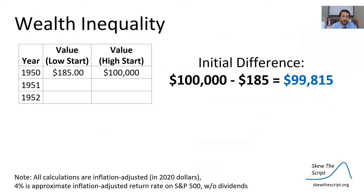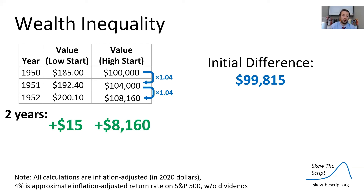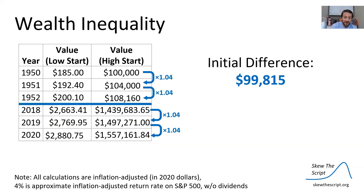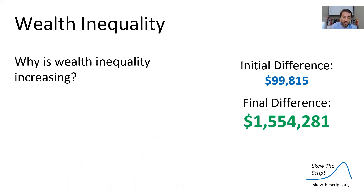One example: compare a low starting wealth of $185 in 1950 versus starting with $100,000 in 1950. The initial difference is about $99,815. However, if each grows by 4% per year, after two years our $185 low start added $15, while the high start added $8,100. Continuing all the way to 2020, compounding each time, our low start added about $2,700, but the high start added nearly $1.5 million. So our final difference is over $1.5 million, compared to an initial difference of just over $100,000.